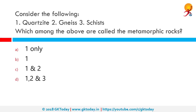Consider the following: 1. Quartzite, 2. Gneiss, 3. Schist. Which among the above are called metamorphic rocks? The correct answer is all three. Quartzite is a hard metamorphic rock originally formed from sandstone through heating and pressure. Gneiss is a common type of rock formed by high-grade regional metamorphic processes from pre-existing igneous or sedimentary rocks. Schists form a group of medium-grade metamorphic rocks notable for the preponderance of lamellar minerals such as micas, chlorite, talc, hornblende, and graphite.